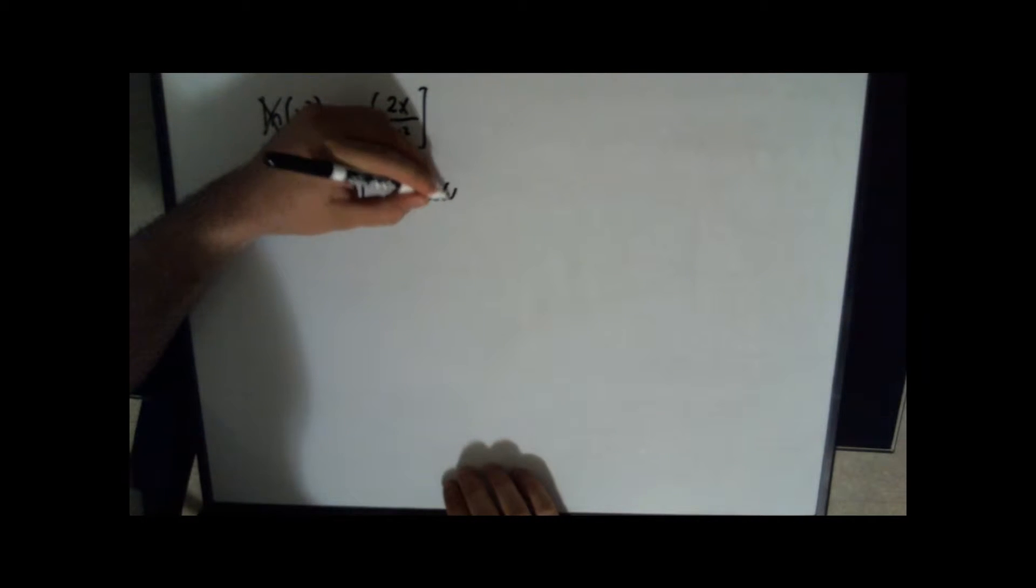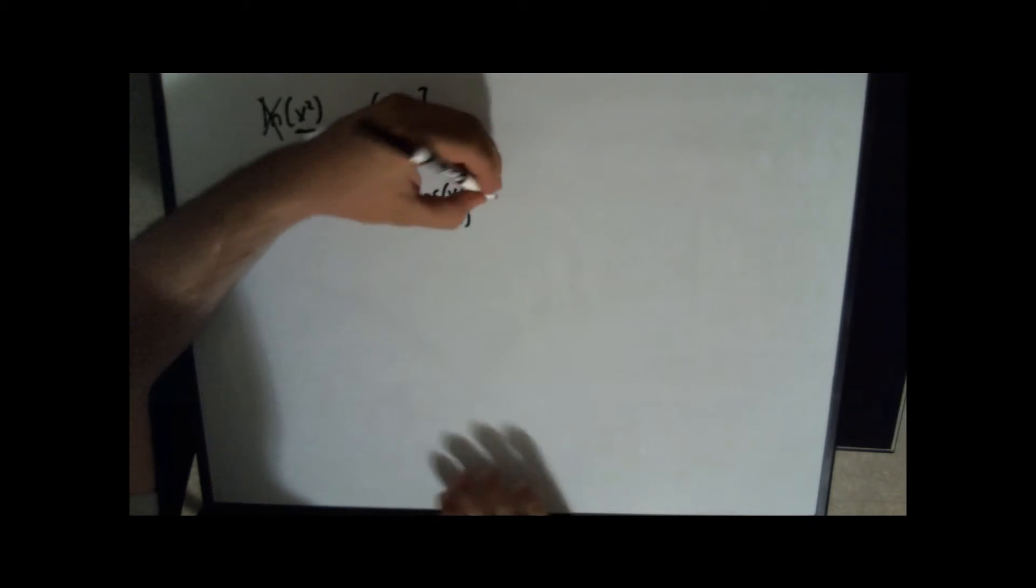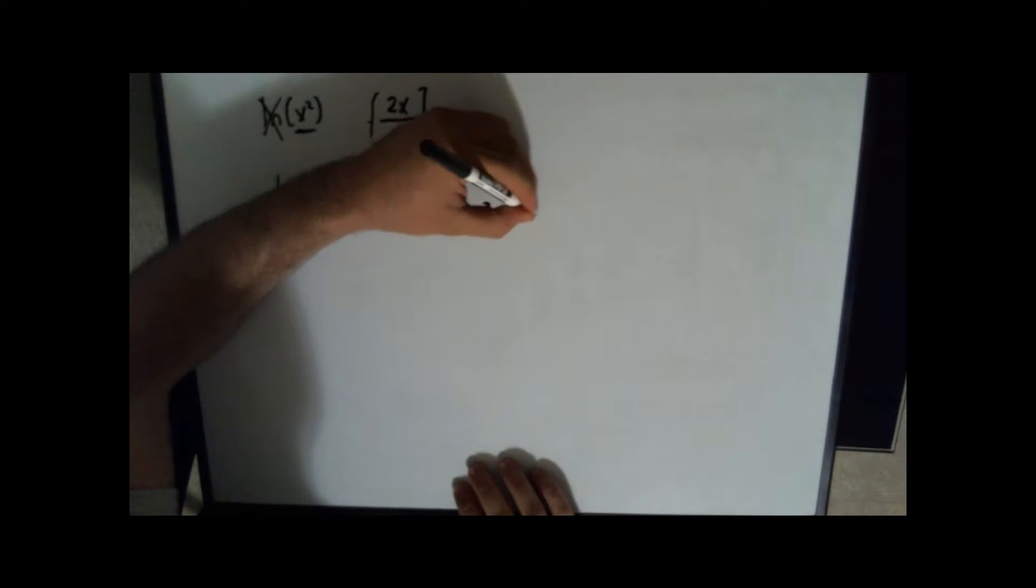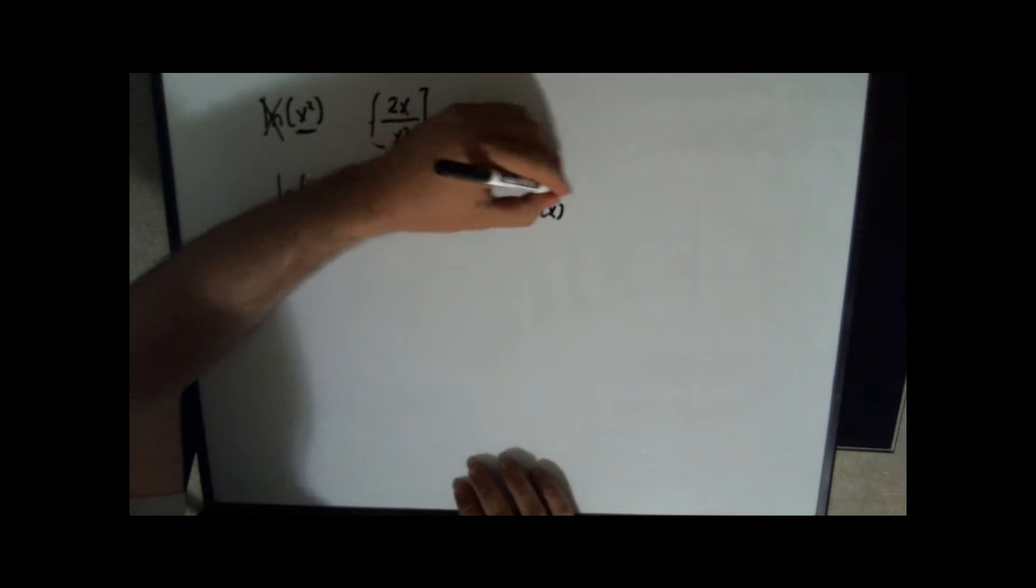Cosine of x. And then I write the original sine of x. That equals cotangent of x. Not that it matters.